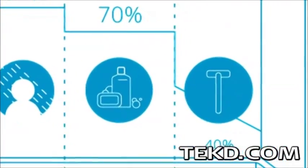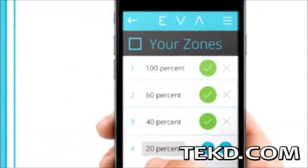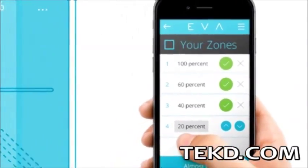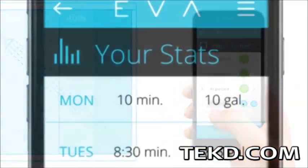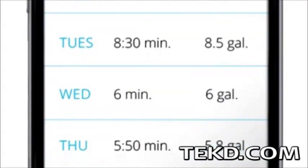Then reducing the flow when farther away lathering up or shaving. Every good smart device needs an app, and EVA has one too, allowing personal customization of shower zones and tracking everything from usage, time showering and conservation goals.